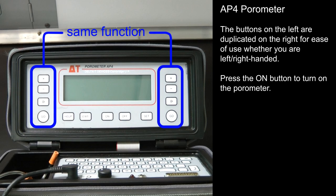When using the AP4 Porometer, notice that the buttons on the left are duplicated on the right for ease of use whether you are left-handed or right-handed.